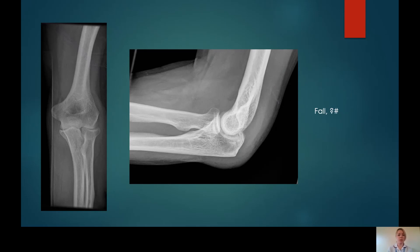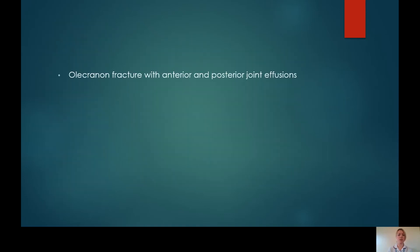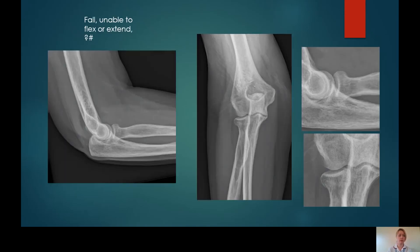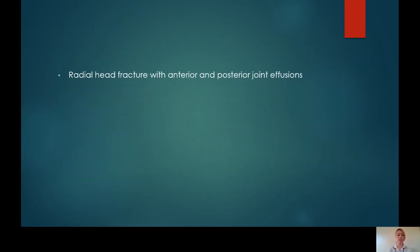What we're going to do now is have a look at some elbow X-rays — a test yourself. This person has had a fall, query fracture. In this case, you should have been able to see the olecranon fracture with anterior and posterior joint effusions present. Next: fall, unable to flex or extend, query fracture. I've included some blown up images as well. Hopefully you've been able to see the subtle radial head fracture with anterior and posterior joint effusions present.